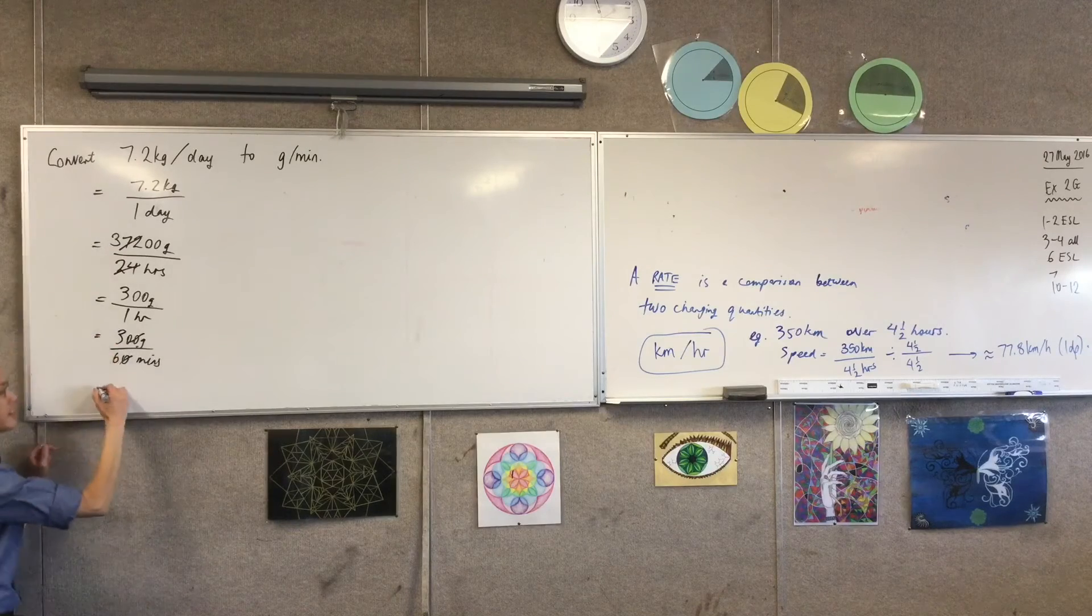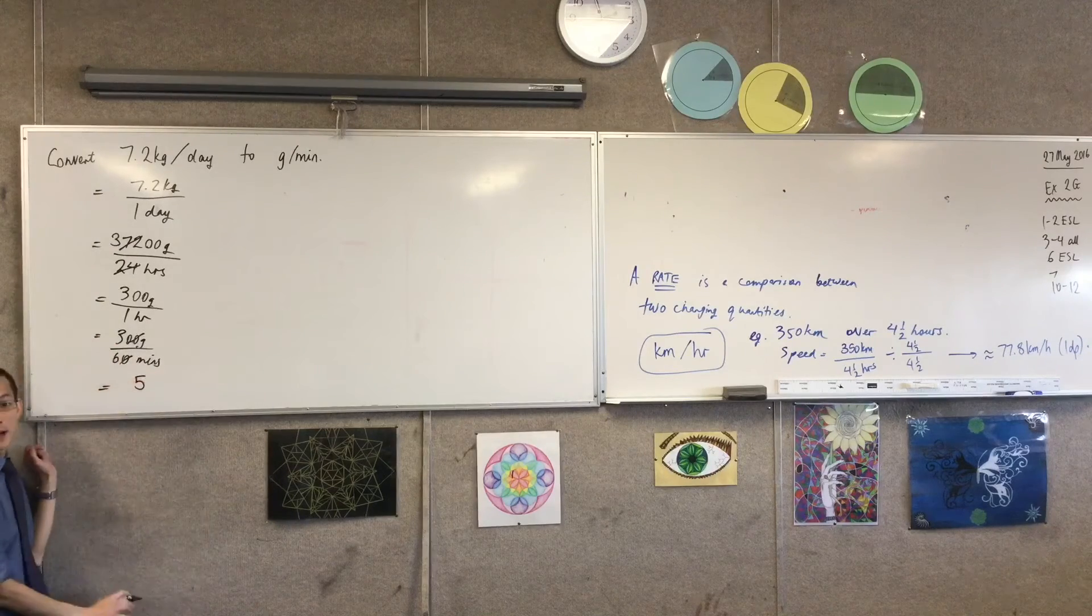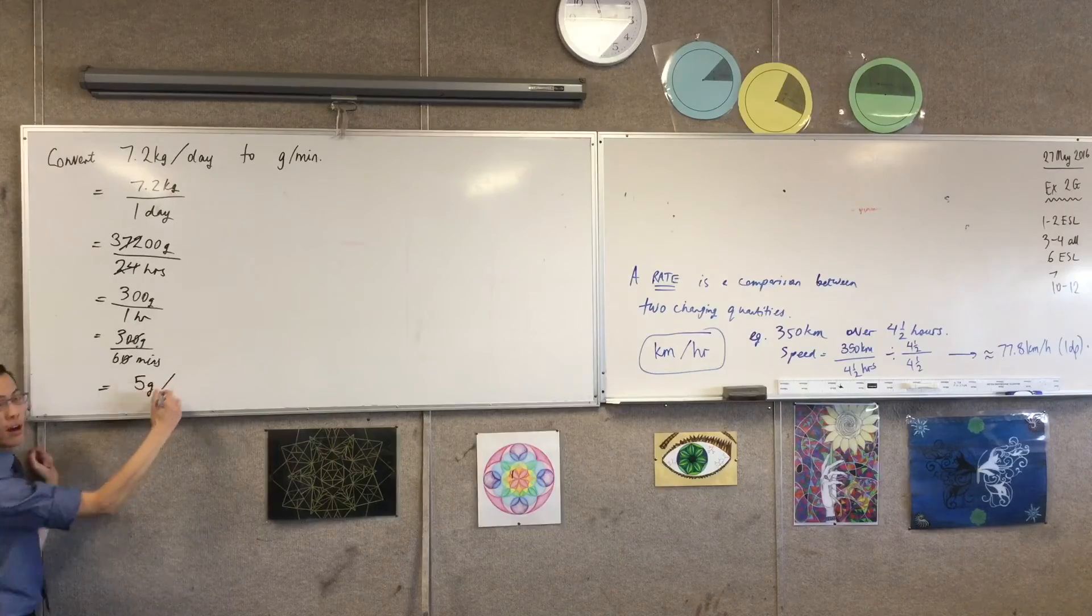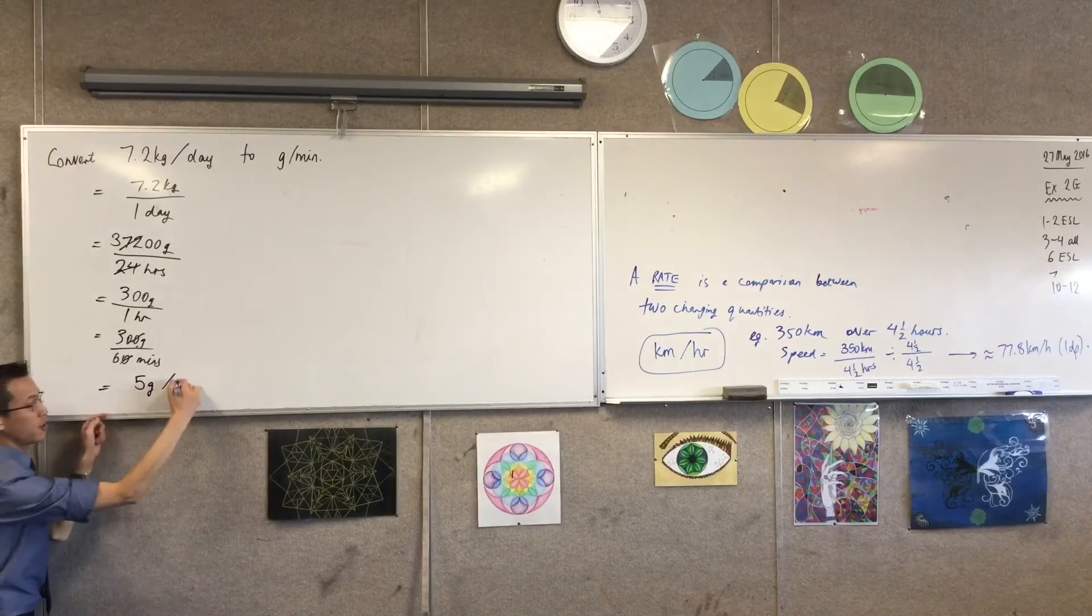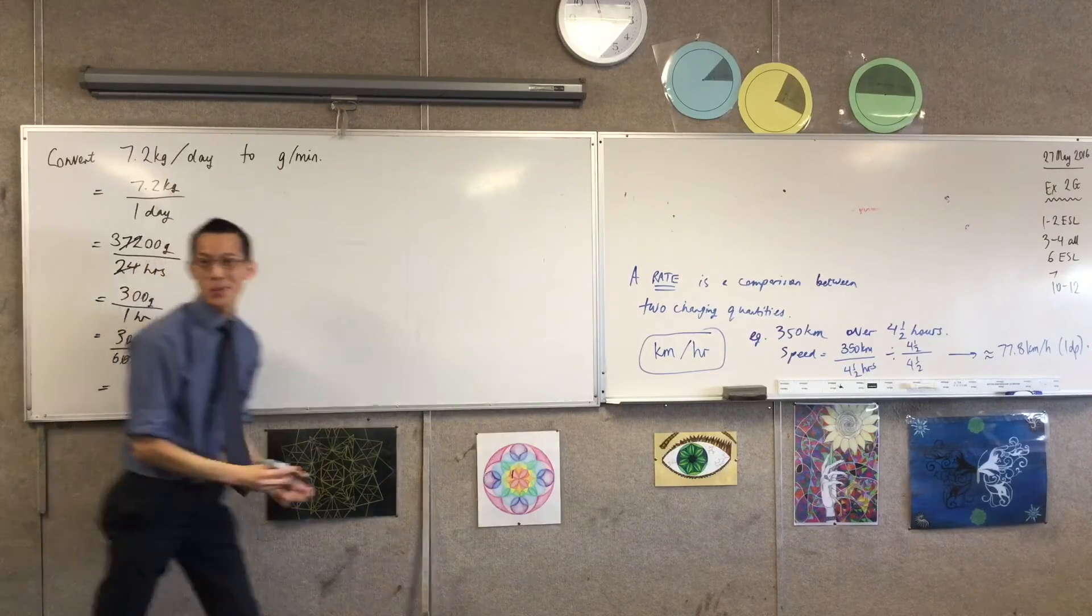So now that I've got the final answer, 5 grams per, there's only one minute left on the bottom. So I'll just say 5 grams per minute, okay?